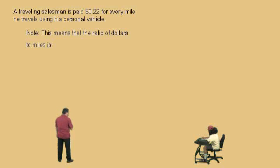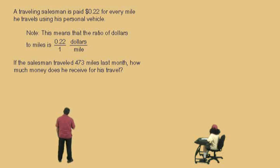So, this means that the ratio, Charlie, of dollars to miles is .22 to 1. Remember, .22 dollars to 1 mile. And so, if the salesman traveled 473 miles last month, how much money does he receive for his travel?